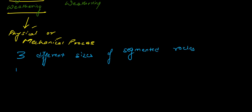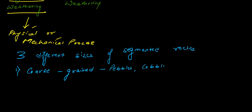The very first size is known as coarse grained. Here we have the largest pieces — the largest remaining pieces are under coarse grained. For example, we can say pebbles or cobbles. Coarse grained is basically the biggest form, the biggest rock particles which are left after physically or mechanically breaking them up.